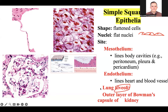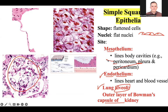Simple squamous epithelium is found in the alveoli of the lung, the endothelium of blood vessels and the heart, Bowman's capsules of the kidney, and also in the mesothelium — the three layers of our body: the peritoneum, the pleura around the lung, and the pericardium around the heart. These are the locations where you can find simple squamous epithelium.